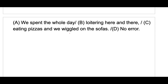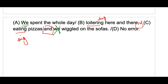Next: 'We spent the whole day loitering here and there eating pizzas and we wiggled on the sofas.' You have 'loitering' (ing), then comma 'eating' (ing), then 'and'. For parallelism, the subject 'we' should be removed and 'wiggled' should be replaced with 'wiggling' (ing): '...and wiggling on the sofas.'